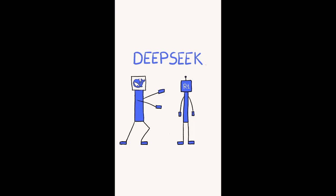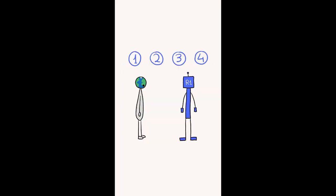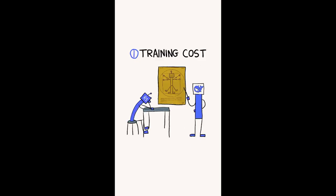Last week, it released R1, an AI model that matches the performance of OpenAI's O1 model across most benchmarks for coding, reasoning, math, and more. This shocked the world for four reasons.